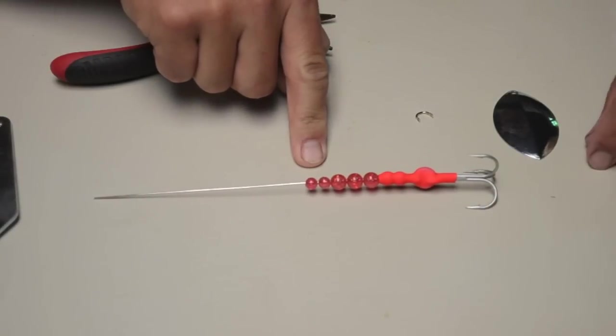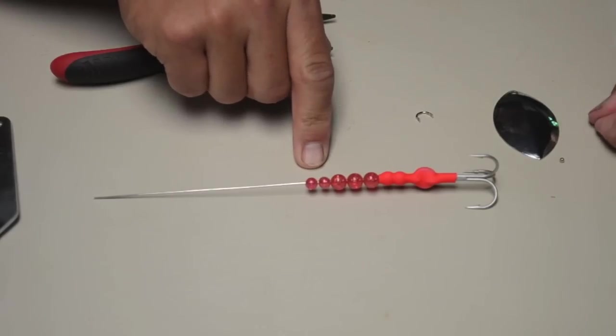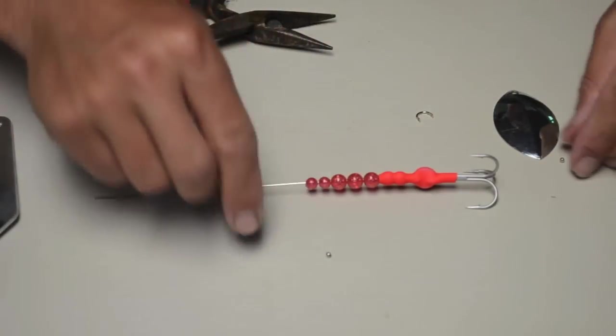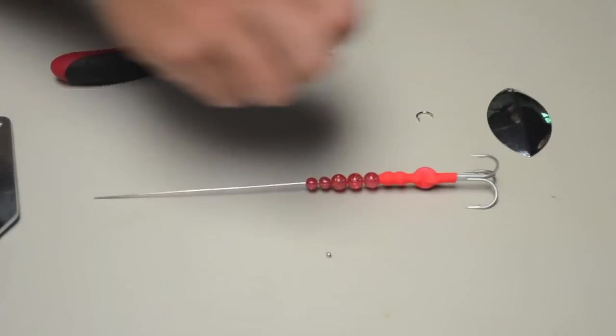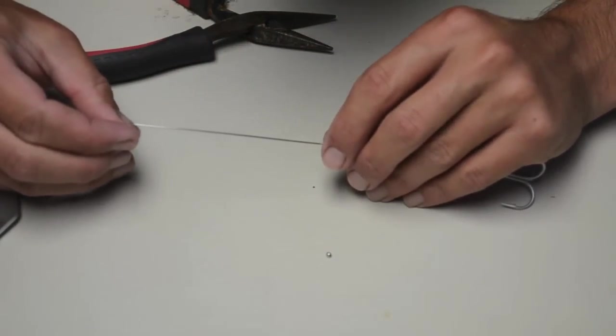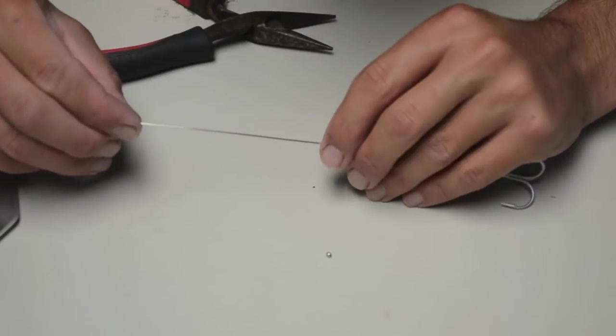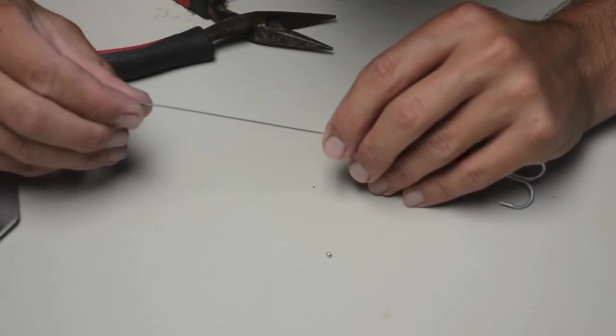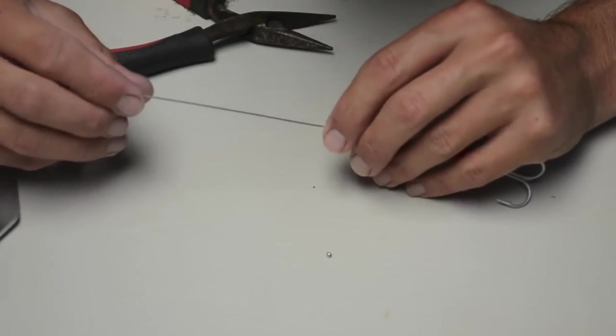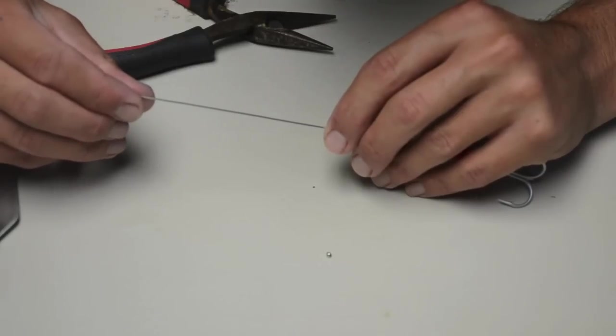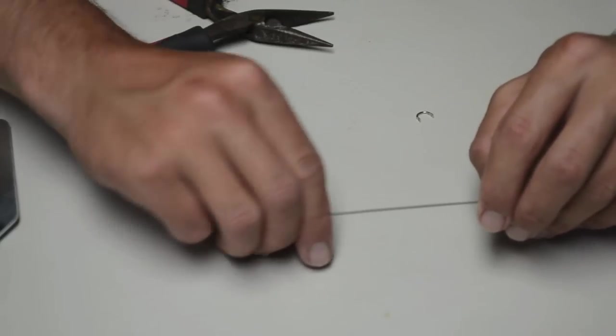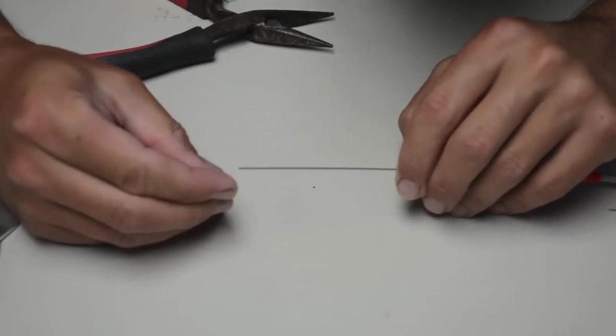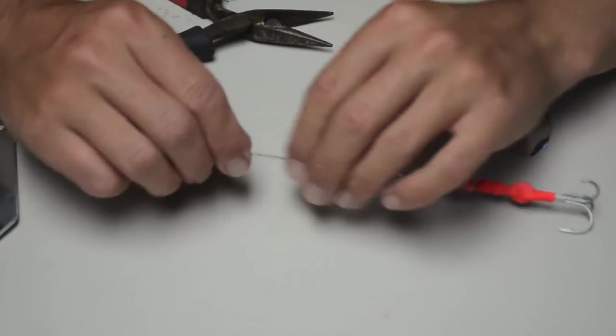Then the next step is to put our basically our bearing for the blade to spin on. So I have these tiny hollow metal beads that you can barely see. Slide those down over. I like to use two of them. They fit just perfectly over this wire.